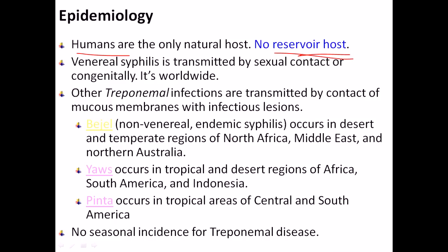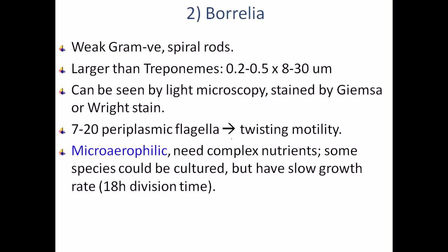Now moving to Borrelia, which is also a gram-negative spirochete with a spiral rod-shaped structure. Instead of three flagella as in Treponema, Borrelia has seven to twenty periplasmic flagella, providing twisting or screw-like motility. Unlike Treponema, Borrelia can be seen by light microscopy, but must be stained with different techniques such as GMSA staining or Wright staining instead of gram staining. Even though they are gram-negative, gram staining does not work — GMSA or Wright staining must be used.